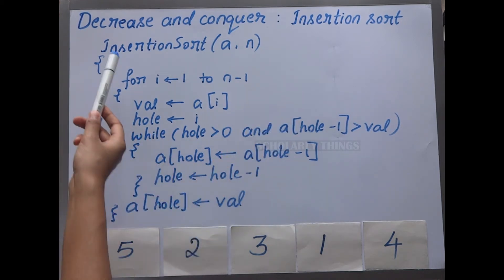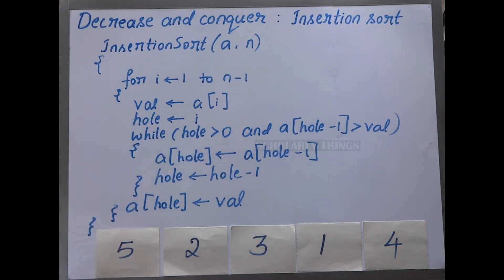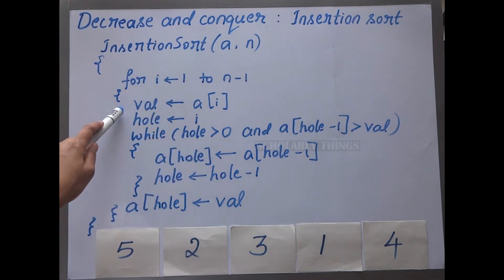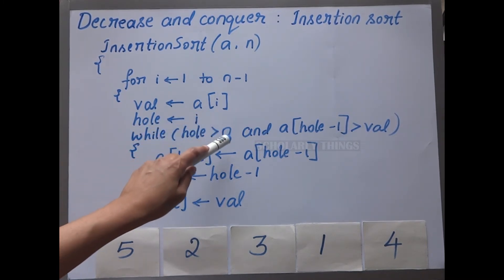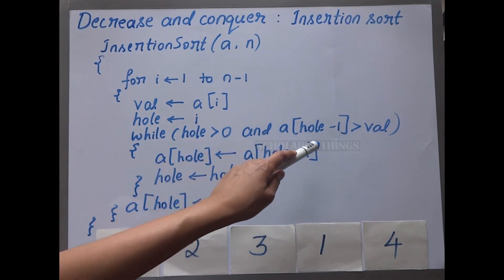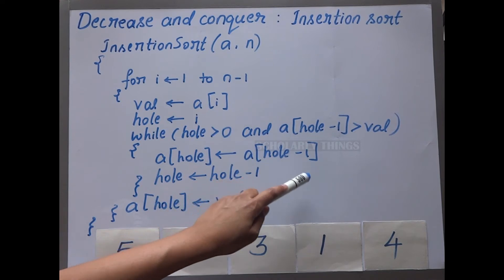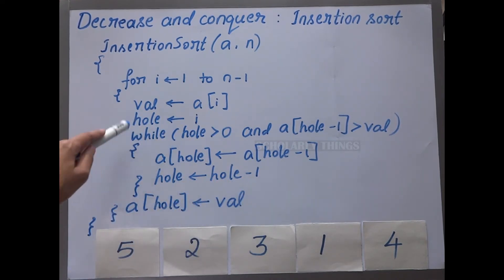Insertion sort is a sorting technique under the decrease and conquer method. It involves in-place shifting and sorting of elements. Here is the pseudocode: for i equal to 1 to n minus 1, value equals a[i], hole equals i. While hole is greater than 0 and a[hole minus 1] is greater than value, set a[hole] equal to a[hole minus 1] and hole equal to hole minus 1. When you come out of the while loop, set a[hole] equal to value.